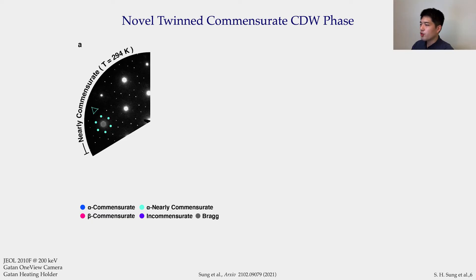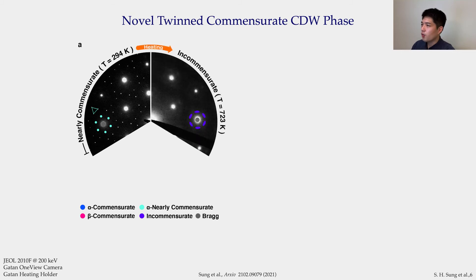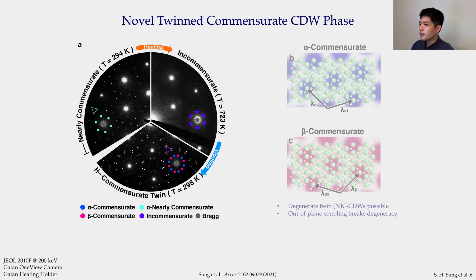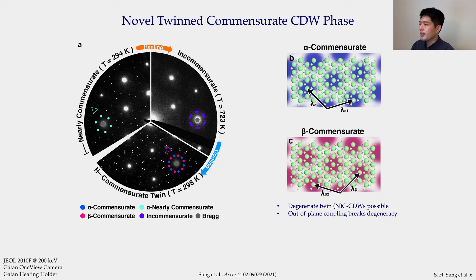Here we see the room temperature diffraction pattern of 1T TaS₂. What I'm going to show is a new way to thermally access a new phase. First, we heat to about 600 Kelvin and stay for about 5 to 10 minutes, then cool back down to room temperature. Here is the diffraction pattern of the new phase. You can see there are a lot more peaks. Comparing to the original nearly commensurate state, the peaks come in pairs and are mirror images of each other. In real space, this corresponds to two mirror-symmetric degenerate CDWs, which we name alpha and beta.